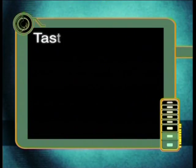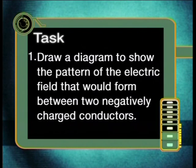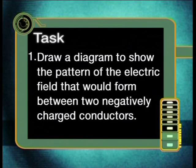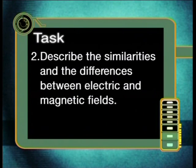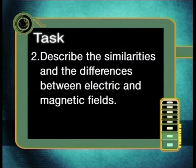Now, with all this information still fresh in your memories, why don't you give today's task a try? Draw a diagram to show the pattern of the electric field that would form between two negatively charged conductors. Also, describe the similarities and the differences between electric and magnetic fields.